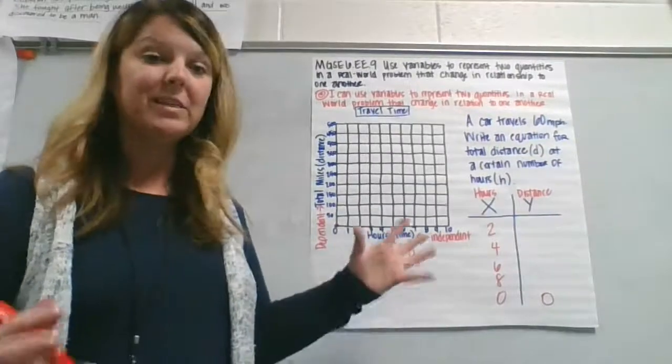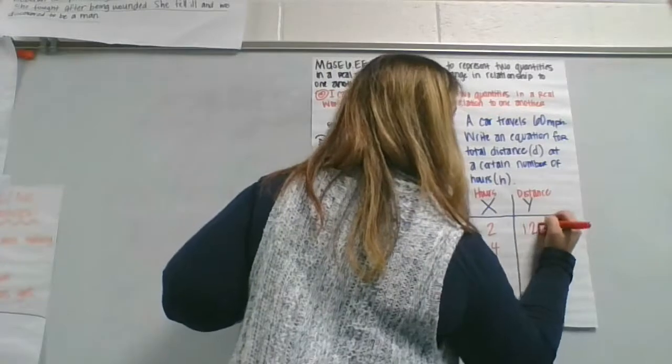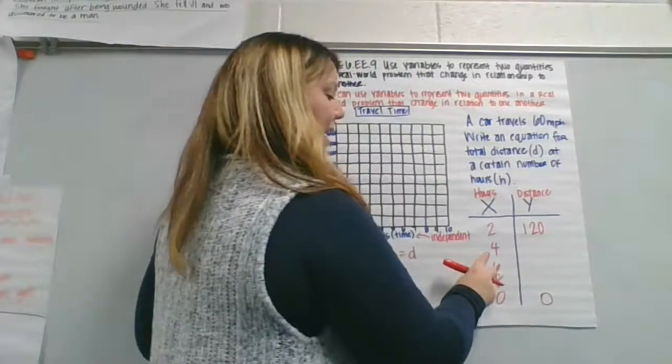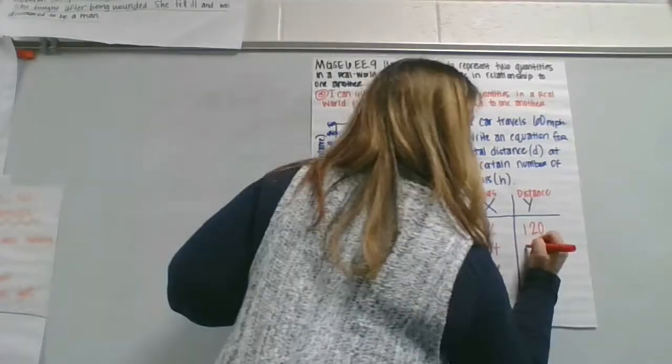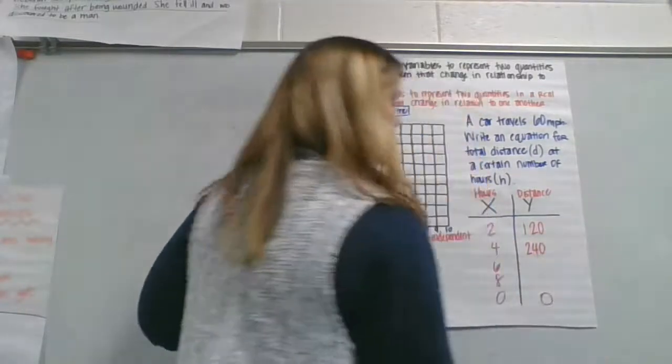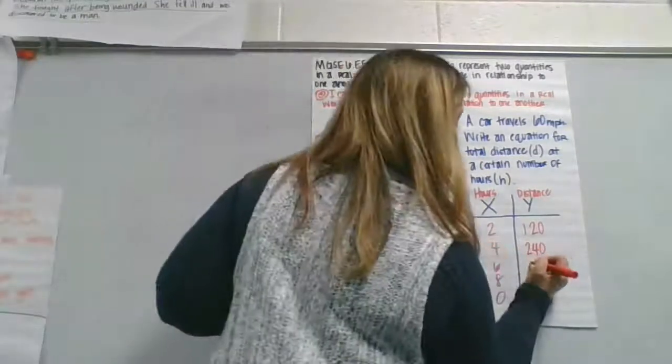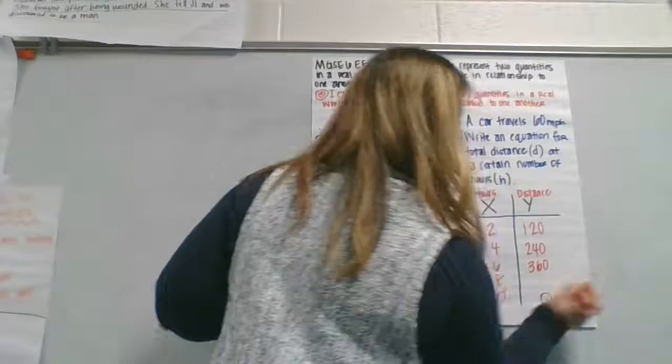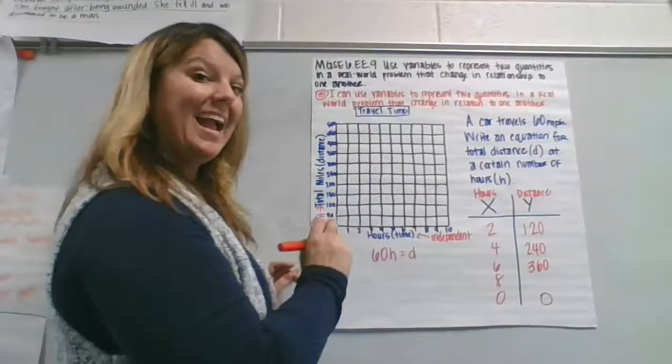60 times two is going to give us 120 miles. And then if we use four, four times 60 is going to give us 240 miles, six times 60, 360 miles, and eight times 60 is going to be 480 miles.